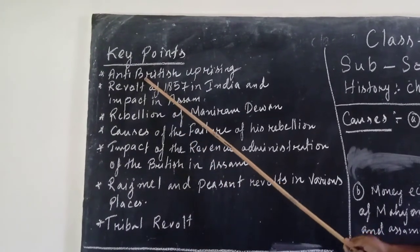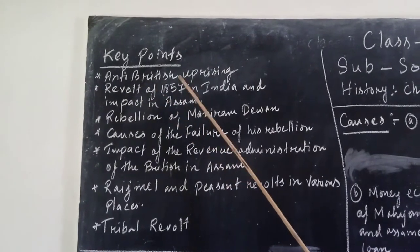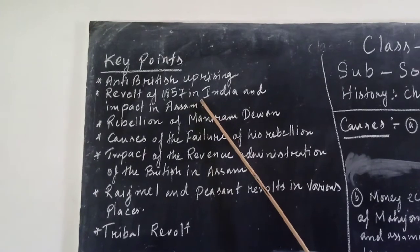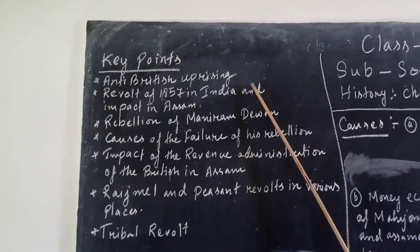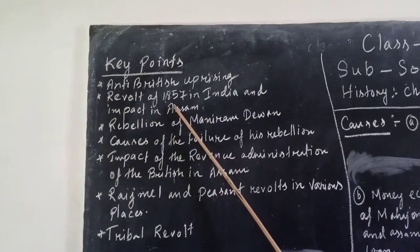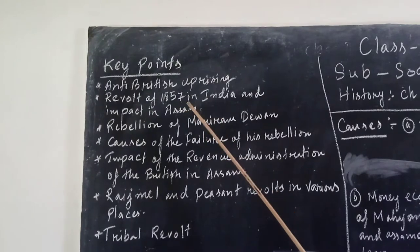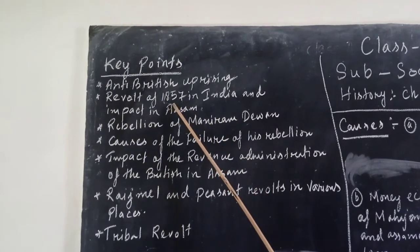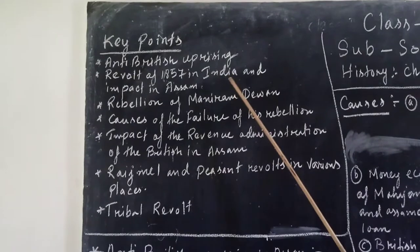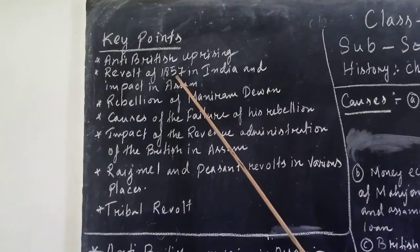The next key point of this lesson is the Revolt of 1857. We know about the 1857 revolt in India, and we will study here what impact it had in Assam, due to the revolt of 1857, which we call the first revolt against the British in India.